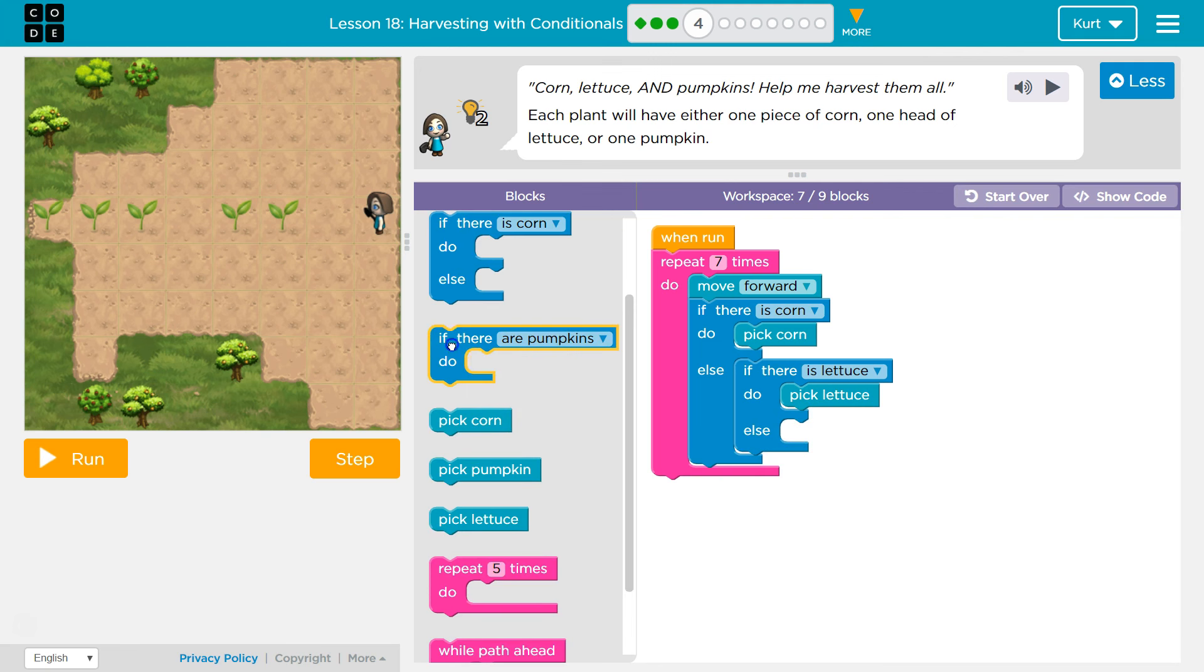We need to ask if there are pumpkins, and if there are, then we pick them. So, first, we ask if there's corn. If there's no corn, else runs. And the else statement is, okay, is there lettuce? If there's no lettuce, else runs here, and we say, okay, are there pumpkins? And if there are pumpkins, we would then pick the pumpkins.